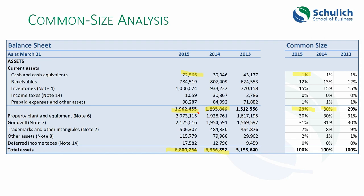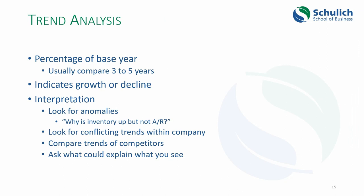A trend analysis looks from left to right across the columns — sometimes called a horizontal analysis — and you're looking for indications of growth or decline in a particular line relative to previous years. When interpreting a trend analysis, look for anomalies: why is inventory changing but accounts receivable is not? You're looking for conflicting trends within the company, and you can compare those trends with another company's financial statements. Always ask what possible reasons could explain the changes you're seeing from one year to another.